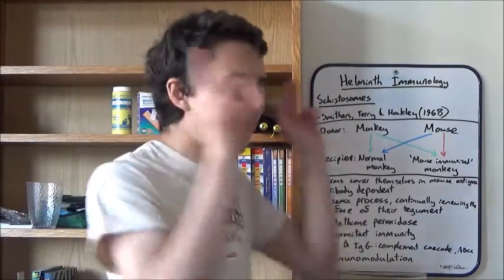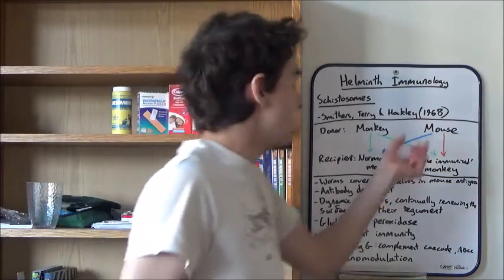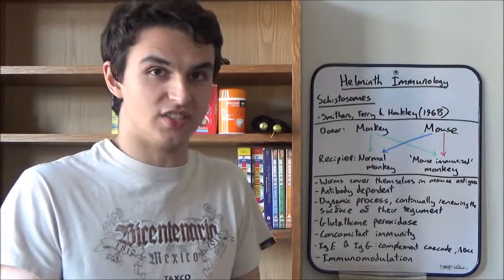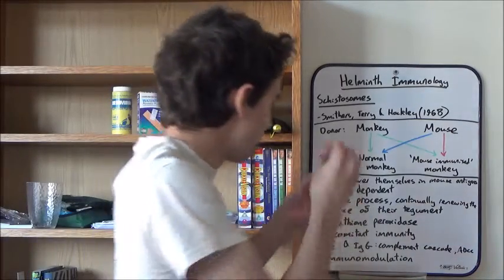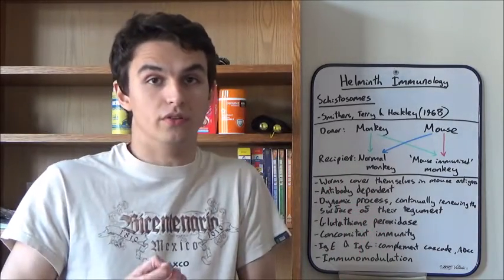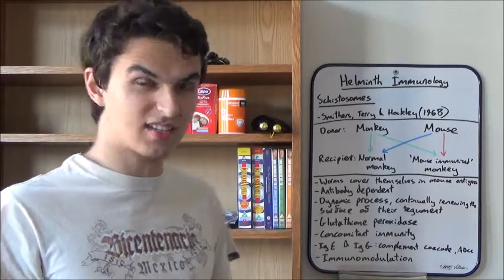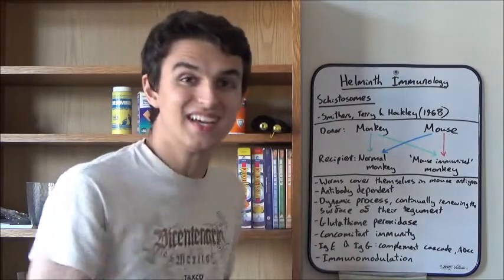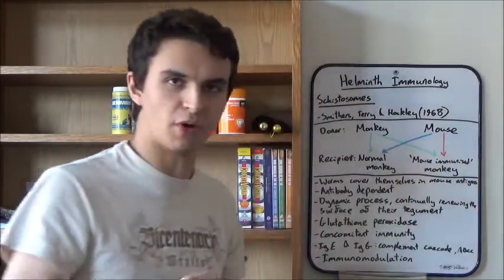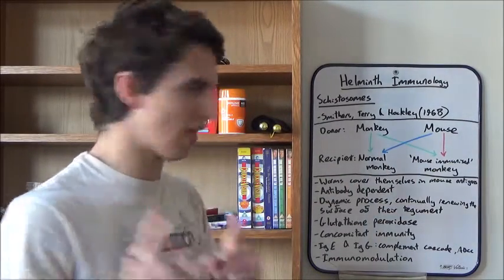And the other host is a mouse-immunised monkey. Now, what I mean by that is, it's a monkey that's immunised against mouse antigens. So, it's been infected with mouse cells in the past. So, it's now immune to mice. Not to the worms. To mice cells. Because it's been infected as foreign in the past. Immune system has reacted. So, there'll be a secondary immune response if mice antigens are present again.